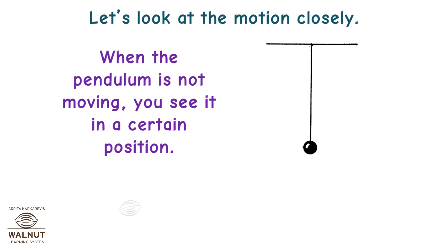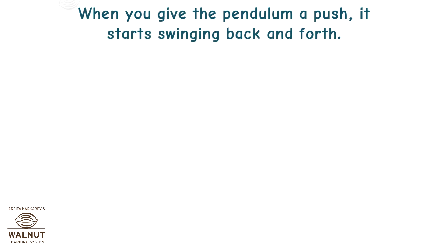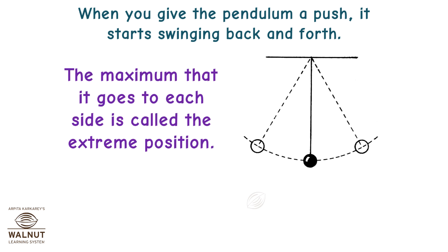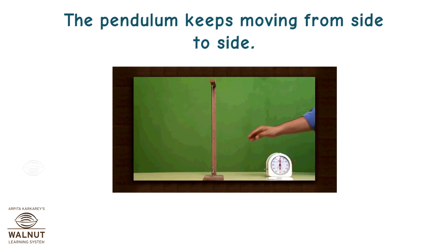Let's look at the motion closely. When the pendulum is not moving, you see it in a certain position. We call this position the mean position. Let's label it as M. When you give the pendulum a push, it starts swinging back and forth. The maximum that it goes to each side is called the extreme position. There is one extreme position on each side. Let's label those as A and B. The pendulum keeps moving from side to side.